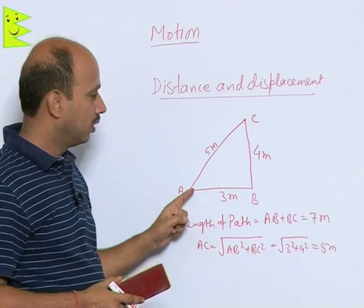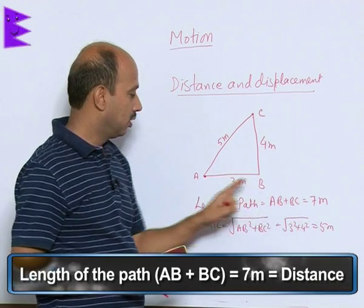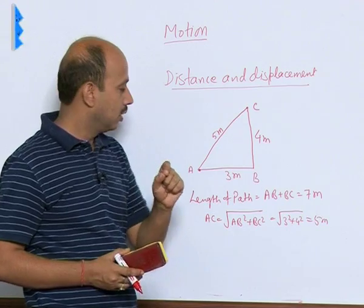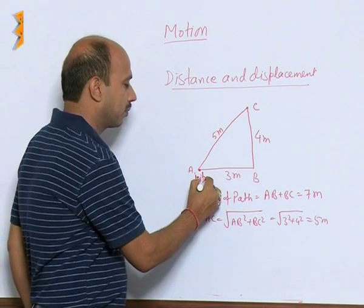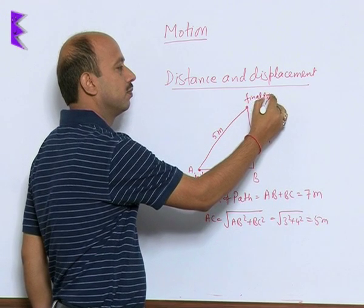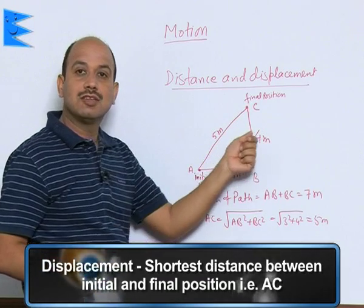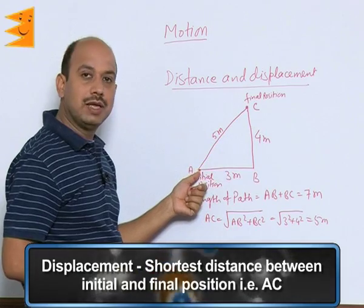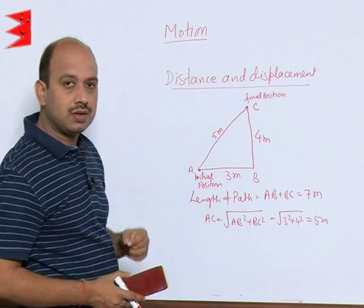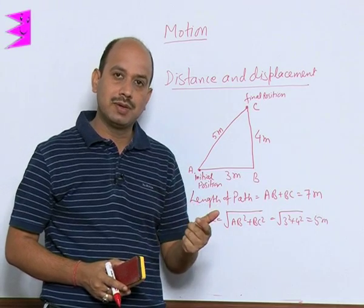The length of the path travelled — A to B then B to C — when you add these two lengths, this is called distance. The initial position is A and the final position is C. The shortest distance between the initial and final position is known as displacement. So AC is your displacement. In this example, distance is 7 meters whereas displacement is 5 meters. Distance is the length of the path travelled by a body, whereas displacement is the shortest distance between the initial and final position.